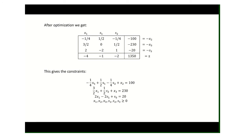When we solve it out after optimization, it's the same problem. All we've done is a bunch of substitutions, but we can ask the same questions now. After we optimize, we get this. Our objective function is z = -4x1 - S1 - 2S2 + 1350. That's what we're maximizing. We have these constraints. Now we can ask again: what happens if we increase x1?